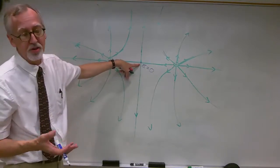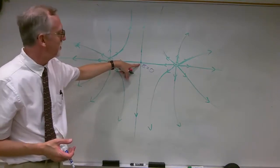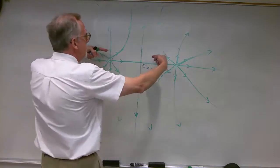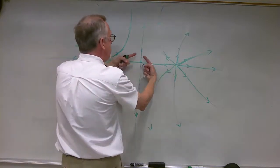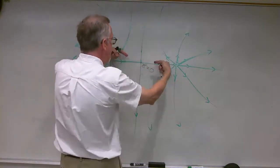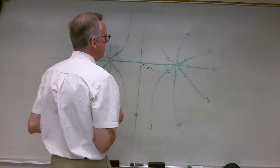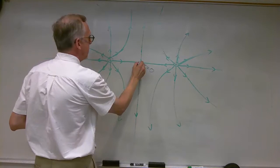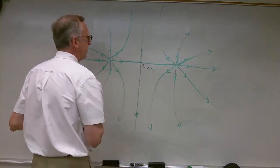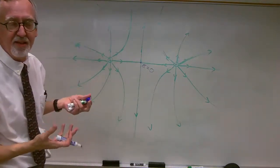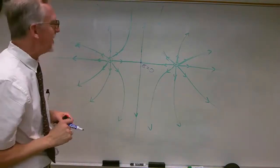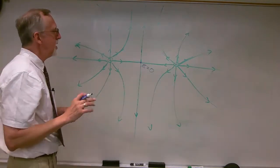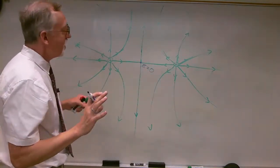Although it looks like these electric field lines cross, the fact of the matter is that right at that point the electric field is zero — there is no field at that point. So these lines are really coming in and bending away from each other, and right at that point the electric field is zero, so it's like they're really not crossing.